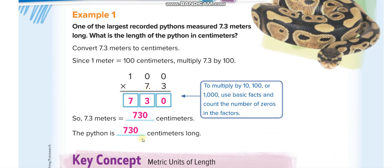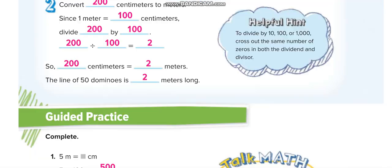Remember, whenever we are multiplying any decimal by 10, 100, or 1000, we just count the number of zeros. For 10 — one zero — we move the decimal one place to the right. For 100 — two zeros — we move the decimal two places. Moving it once gives us 73, and then moving it again gives us 730, so we add a zero. Similarly, when dividing, we move the decimal towards the left.